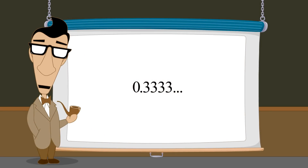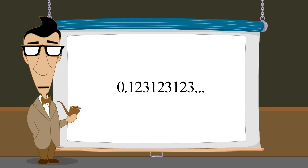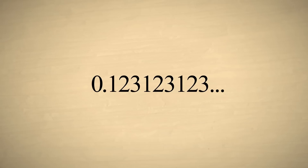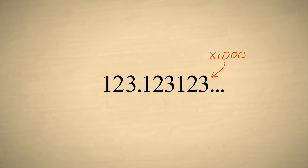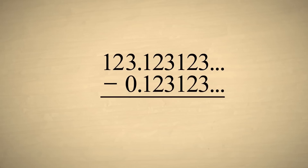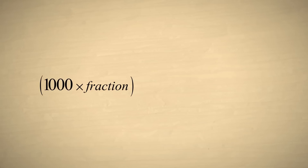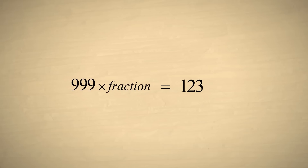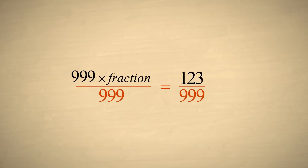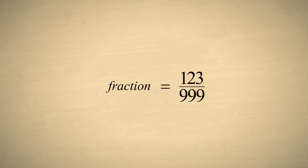Now instead of a single repeating digit, let's convert a decimal number with a repeating sequence of three digits. Since there are three repeating digits to eliminate, we must shift the number three columns to the left by multiplying it by ten three times, which is the same as multiplying by one thousand. We then subtract our original number, which eliminates the repeating digits. Now we write this as an equation: one thousand times the fraction minus the fraction equals one hundred twenty-three. One thousand times the fraction minus the fraction is the same as nine hundred ninety-nine times the fraction. Dividing both sides by nine hundred ninety-nine, our fraction is equal to one hundred twenty-three over nine hundred ninety-nine.